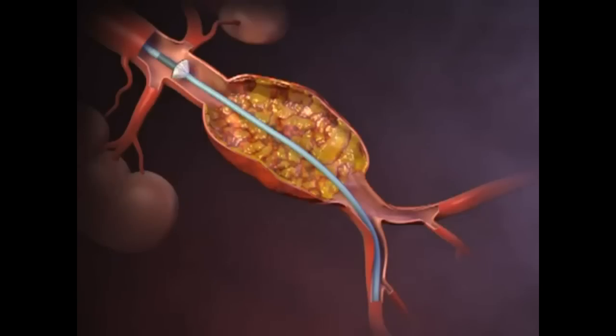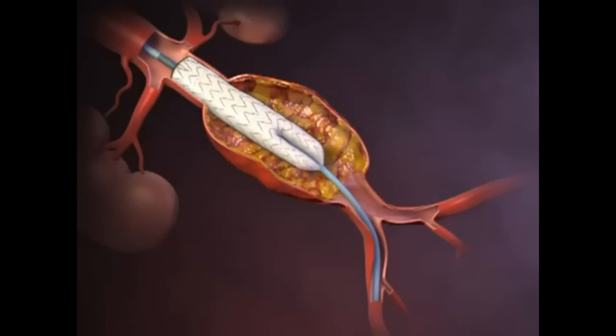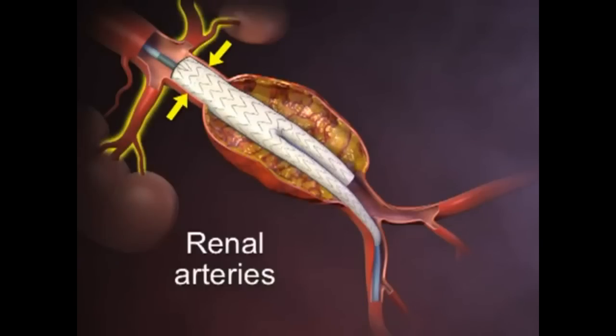The body of the stent graft, composed of a non-permeable polyester material supported by a self-expanding flexible metal frame, is partially deployed with the undeployed upper portion of the device positioned immediately below the renal arteries.